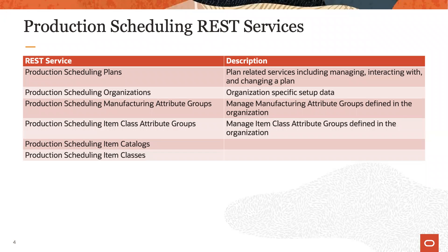This table summarizes the production scheduling REST services available. These REST services are a comprehensive set of services that allow you to interact with the application. While there are many REST services available, the two main REST services you will need are production scheduling plans and production scheduling organizations. The details of the REST services will not be covered in this lesson as they contain over a thousand attributes.